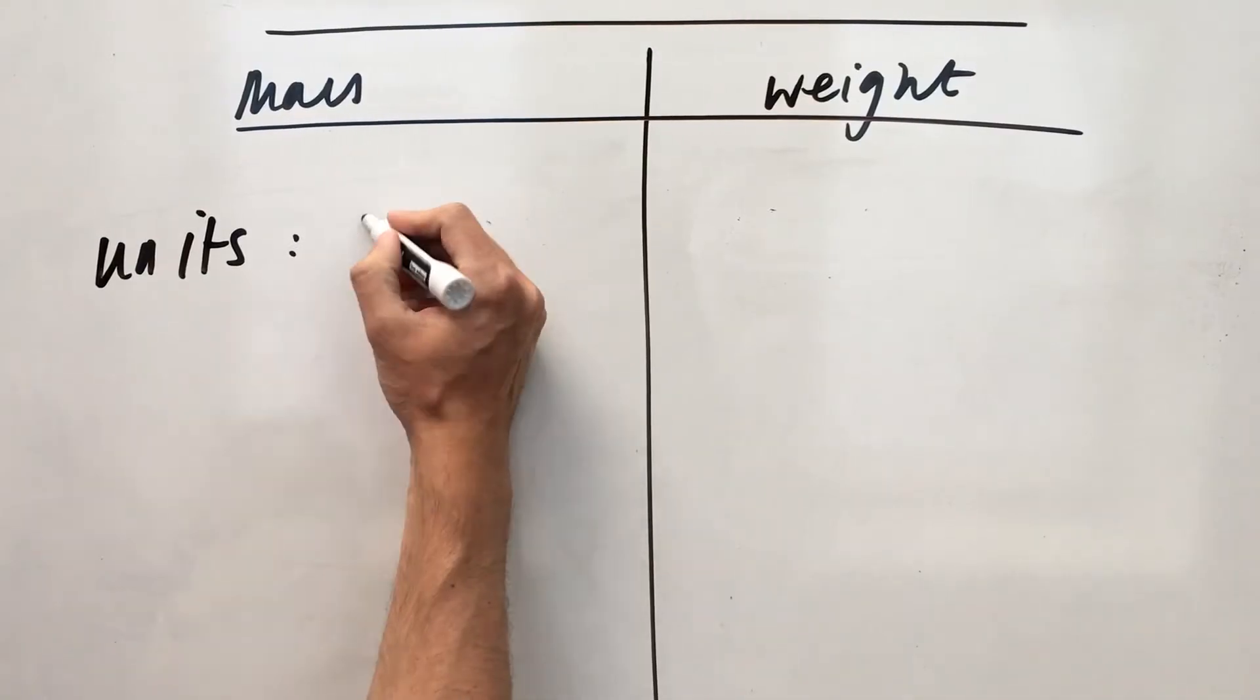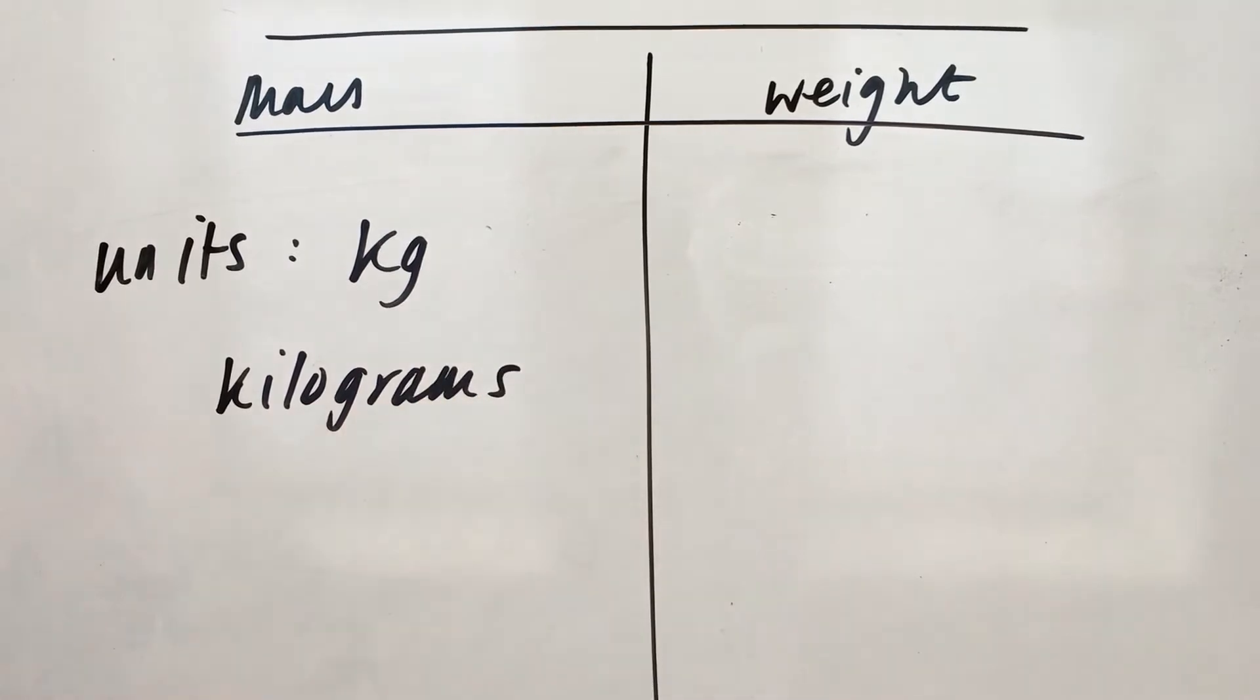The units for mass are kilograms. So any time, in any question, if you see a number followed by kilograms, you know that's the mass of the object. That will not change, no matter where you are in the universe.